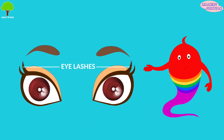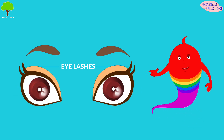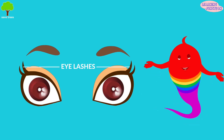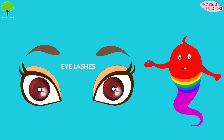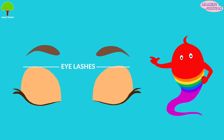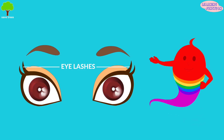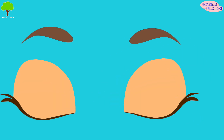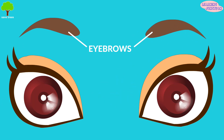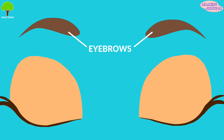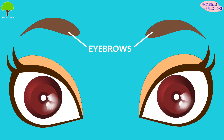Eyelashes. Eyelashes catch the dirt and they trap it as our eyelids close. Eyebrows. Eyebrows also help to keep sweat and dirt out of our eyes.